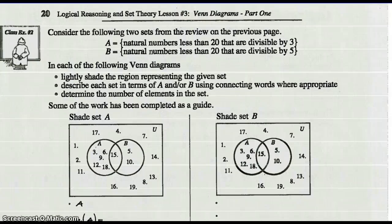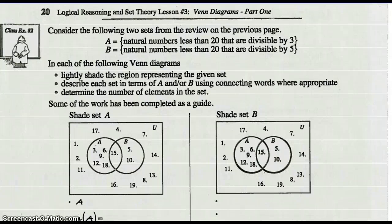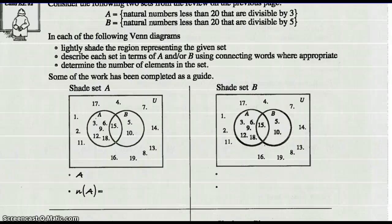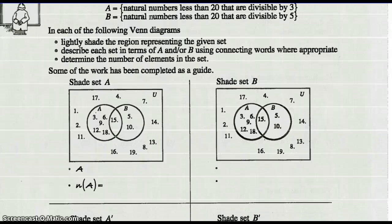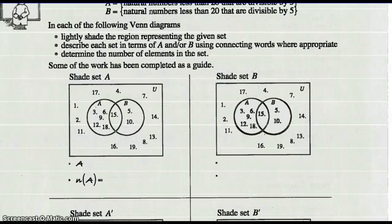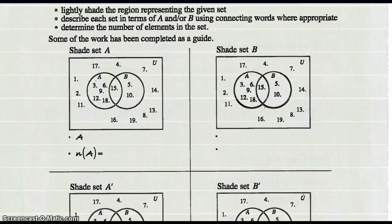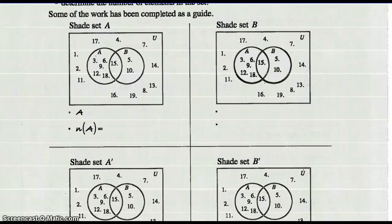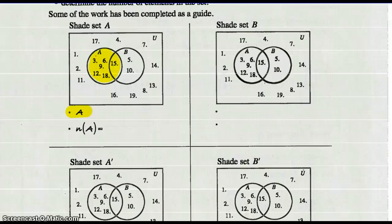Consider the following two sets from the review on the previous page — we're still talking about sets A and B. Lightly shade the region representing the given set, describe each set in terms of A and/or B using connecting words, and determine the number of elements in the set. So shade set A — well, here's set A. Set A written in set notation is like that. And then the number of elements in set A — if you count, there are six elements inside circle A.